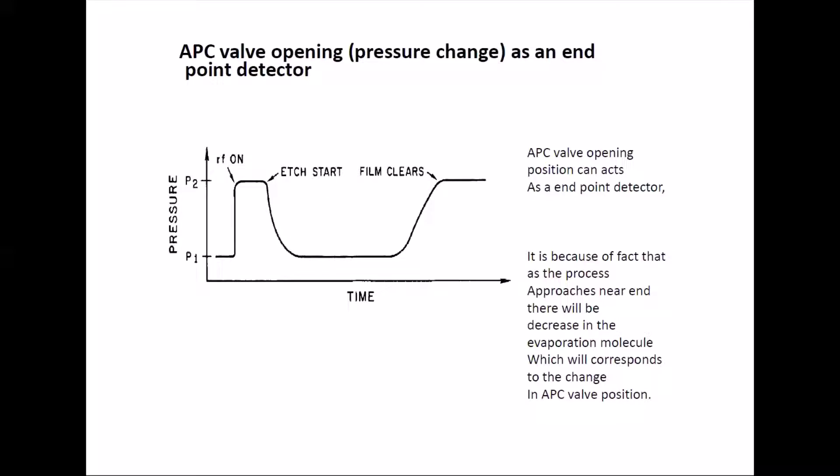Now I'm going to talk about the cheaper endpoint detectors which are available in your system. You have something called APC which is Automatic Position Controller, which controls how much your valve has to open to maintain the chamber pressure, let's say 10 millitorr. When your RF is on, you raise the pressure and start your RF. Your valve is opening at some point and it maintains it, but when your etch starts you have a lot of gases coming out.